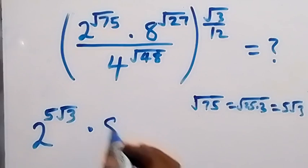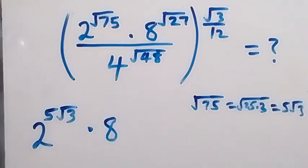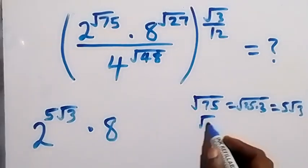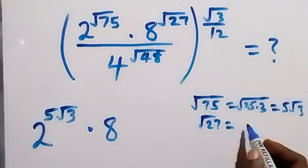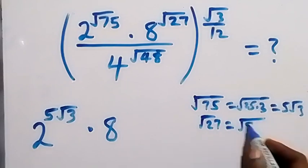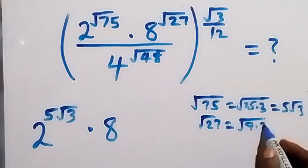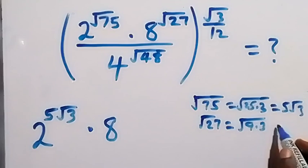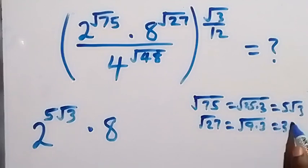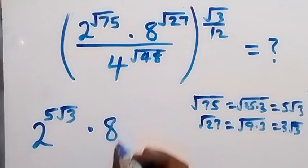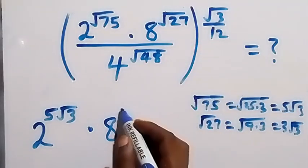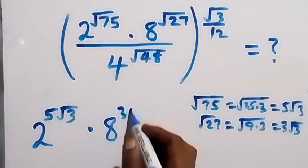Then multiply by 8 raised to power root 27. Root 27 can be written as root 9 times 3. Root 9 is 3, so root 27 becomes 3 root 3. So we have 8 raised to power 3 root 3.